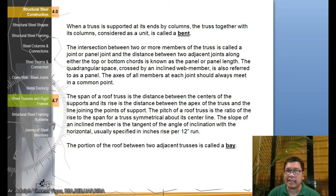When the truss is supported at its ends by columns, the truss together with its columns, considered as a unit, is called a bent. The intersection between two or more members of the truss is called a joint or panel joint. The distance between two adjacent joints along either the top or bottom chords is known as the panel or panel length. The quadrangular space crossed by an inclined web member is also referred to as a panel.